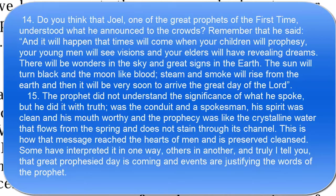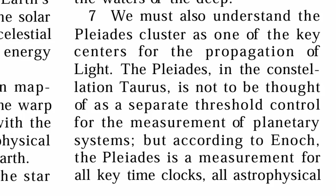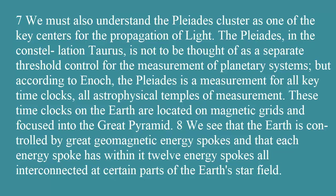Let's go on to verse 7. We must also understand the Pleiades Cluster as one of the key centers for the propagation of light. The Pleiades is in the constellation Taurus — it's not to be thought of as a separate threshold control for the measurement of planetary systems. But according to Enoch, the Pleiades is a measurement for all key time clocks, all astrophysical temples of measurement. These time clocks on the Earth are located on magnetic grids and focused into the Great Pyramid.